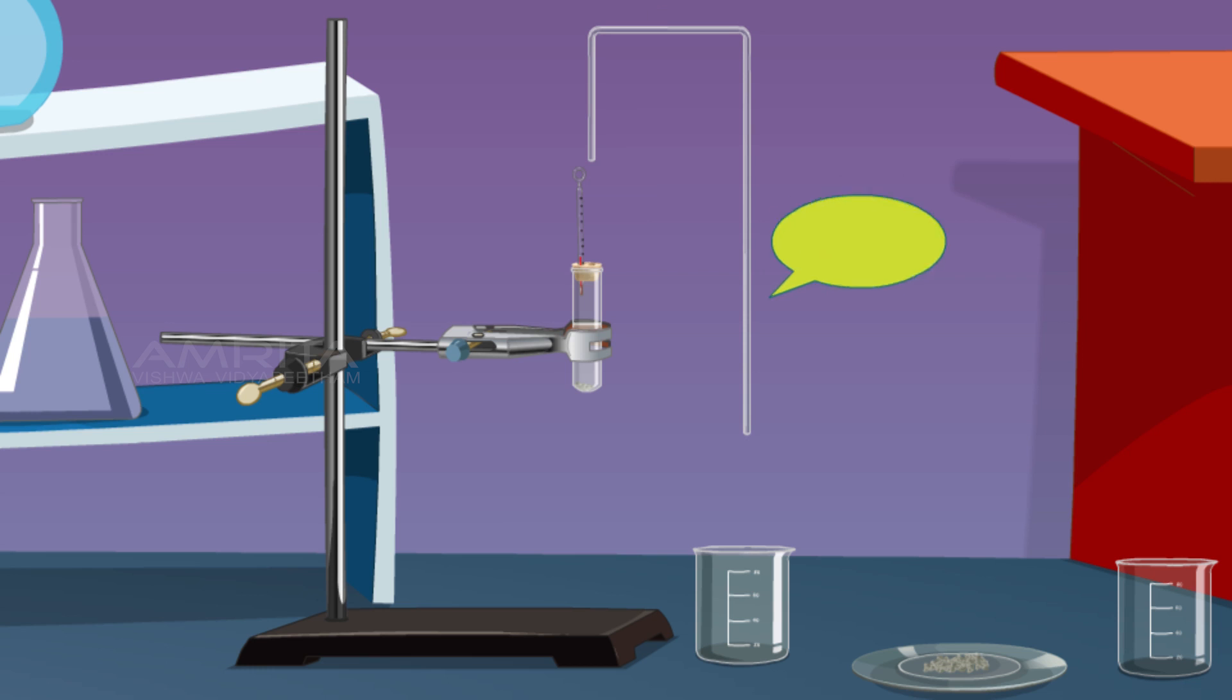Take a delivery tube and insert one end of the delivery tube through the second bore of the cork and insert the other end of the delivery tube into a beaker.